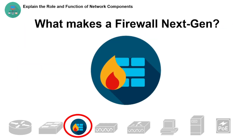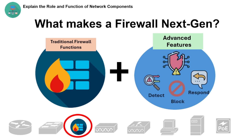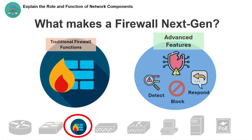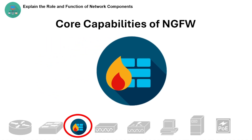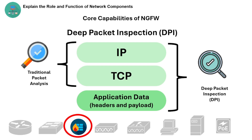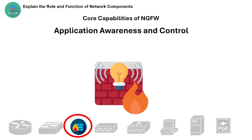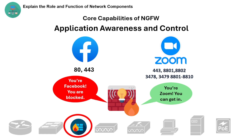So what makes a firewall next-gen? A next generation firewall combines traditional firewall functions with advanced features to detect, block, and respond to modern threats more intelligently. Its core capabilities include Deep Packet Inspection (DPI), which analyzes the full packet including headers and payload — not just the IP and port — as well as application awareness and control, which can identify and control applications regardless of port number.